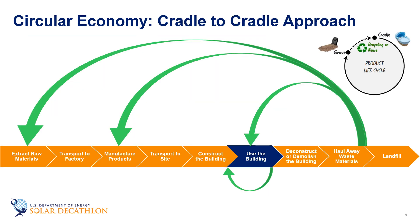Circular economy is another term related to this cradle to cradle approach. A circular economy is a closed loop system in which products are made to last longer and waste is reused or recycled. When a building reaches end of life, we can take some of the components that are still good and directly reuse them in another building — for example, appliances, windows, HVAC or water heating systems, faucets, fixtures, or furniture.